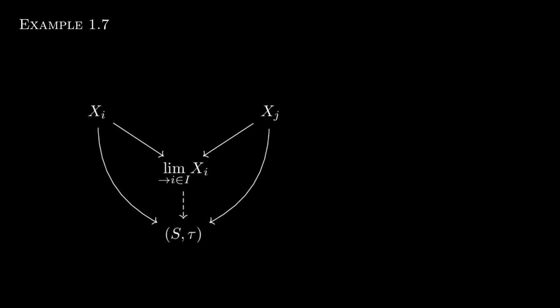Now let's consider the co-limit over this empty diagram. In Set, this is just the disjoint union of the two sets, and in Top it is also the disjoint union of the two spaces. This makes sense, because the largest image in S could just be all of xi and all of xj, which is the disjoint union. The disjoint union is equipped with the disjoint union topology, which is defined to be the finest topology on the set such that the inclusions from xi and xj are continuous — which is precisely what the final topology is.